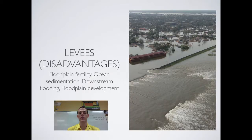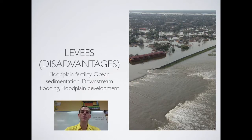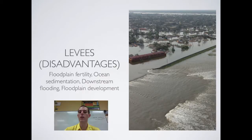Humans don't like getting flooded, so we build levees up on the side of the river so that when it rises it's still contained within the walls of the levee. The biggest benefit of levees is that they prevent flooding. The first disadvantage is that you lose flood plain fertility — people have long known that the flood plain is very fertile soil because every year when the river floods it deposits sediment, leaving very fertile soil for farming.